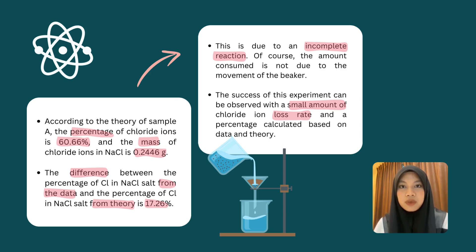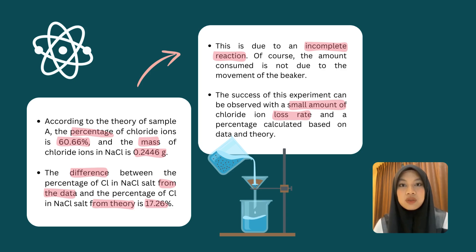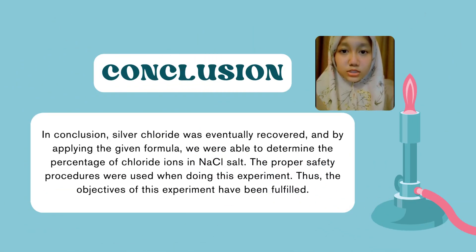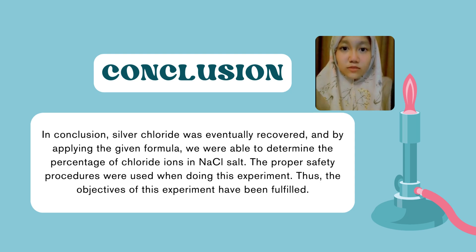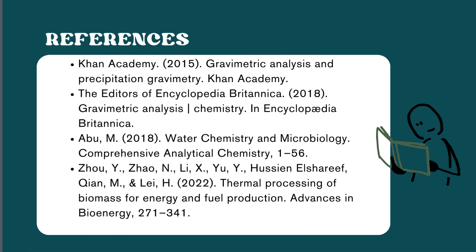Based on the experiment performed and the results obtained, the goal was achieved. It can be theoretically concluded that the resulting precipitate has a large molecule size in the form of a crystalline suspension. This is because the relative supersaturation (RSS) value of this reaction is low, the Q value is low, and the S value is high, so the precipitate is large and easy to filter. Silver chloride was successfully recovered and the amount of chloride ions in sodium chloride salt was determined using the applied formula. Safety measures were observed and the objective of the experiment was met.